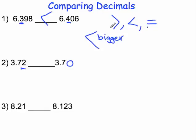And in this case, because 2 is greater than 0, we know that 3 and 72 hundredths is greater than 3 and 7 tenths.